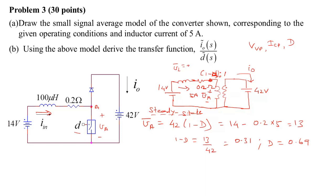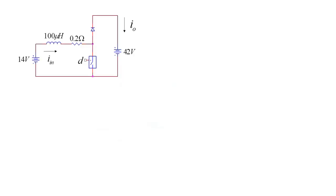The voltage port voltage VVP is given directly as 42V. For ICP, it is the current going out of the current port node, which is -I_in = -5A. Now with VVP = 42V, ICP = -5A, and D = 0.69, we have all three parameters needed to draw the small signal model.